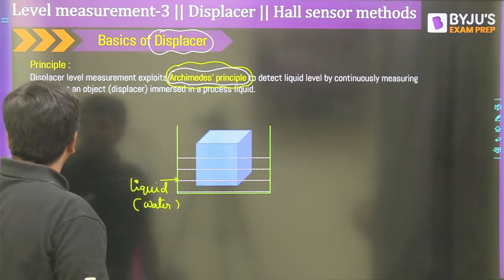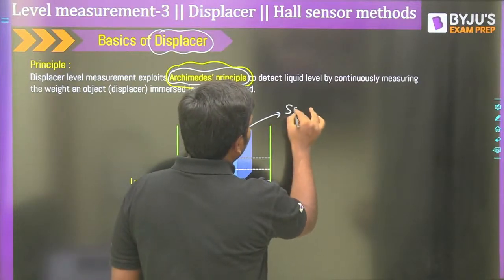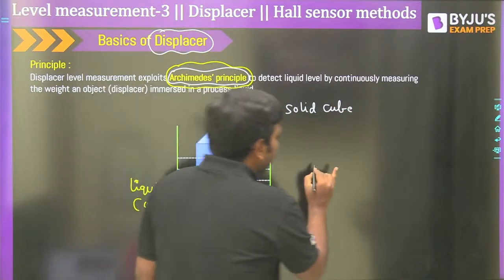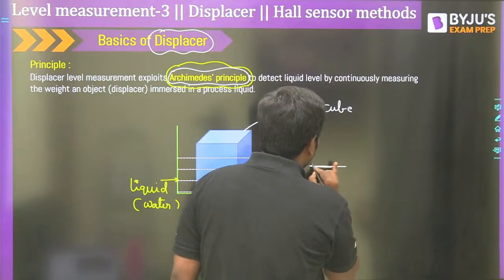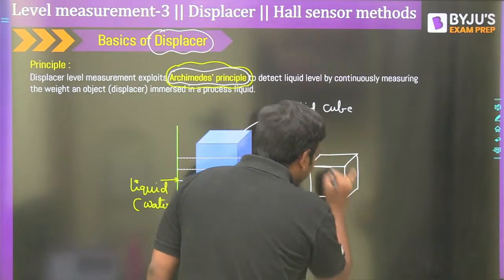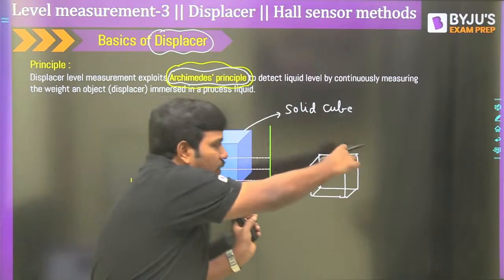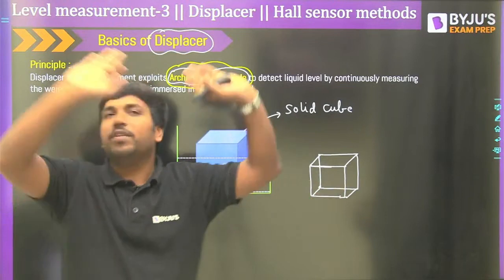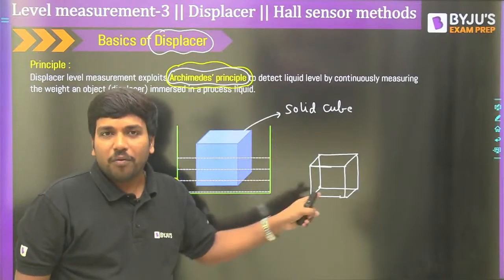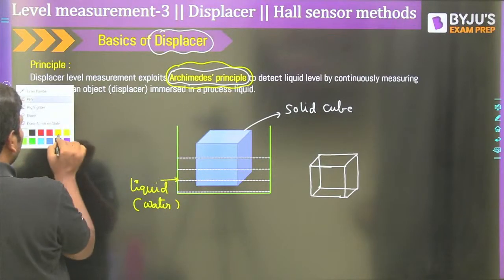Why does this happen? When you dip the solid cube in water, the weight acts in the downward direction. But at the same time, there is another force acting in the upward direction — this is considered as the buoyancy force. This buoyancy force is very useful in level measurement, and you will be surprised to see how it is used there.